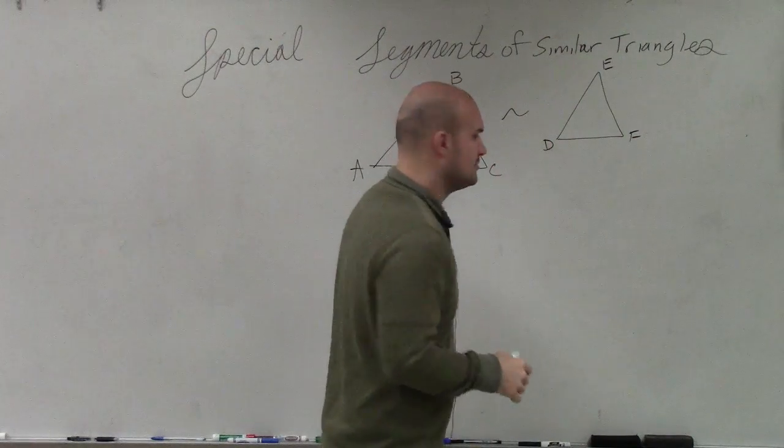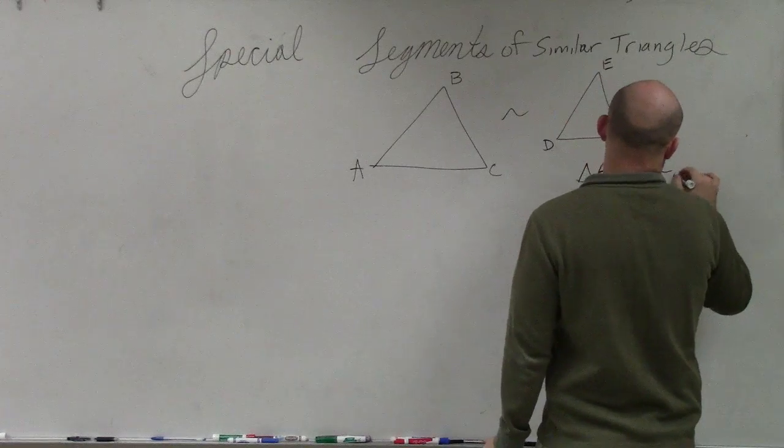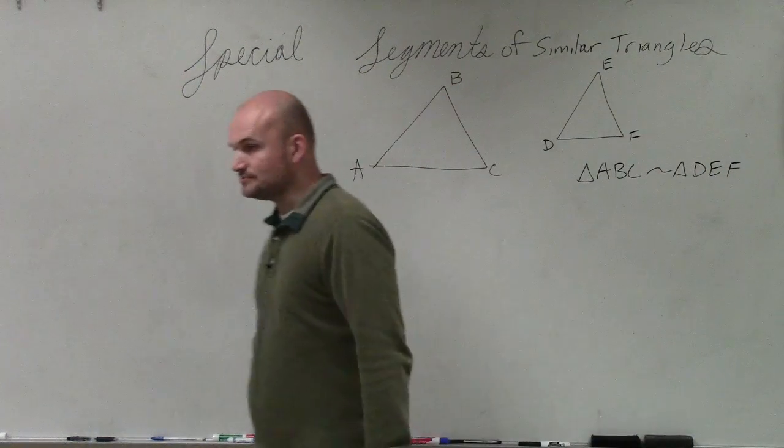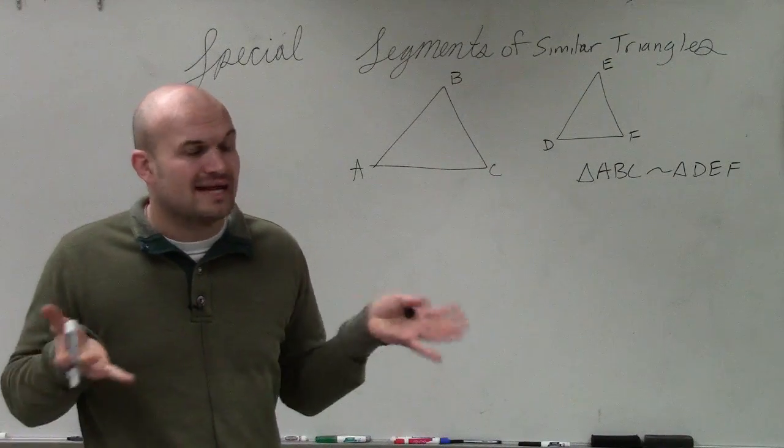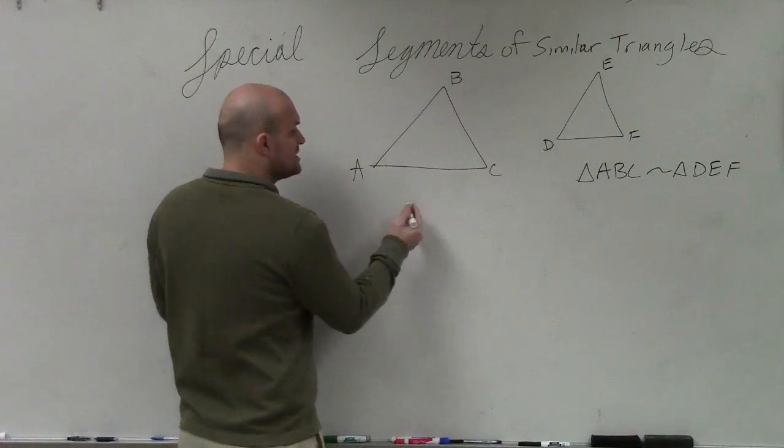And we say those are similar, right? So I can say triangle ABC is similar to triangle DEF. So far in this course, you guys should know that if these triangles are similar, that means they have the exact same shape, but not necessarily the same size, then we can write proportions of their sides.